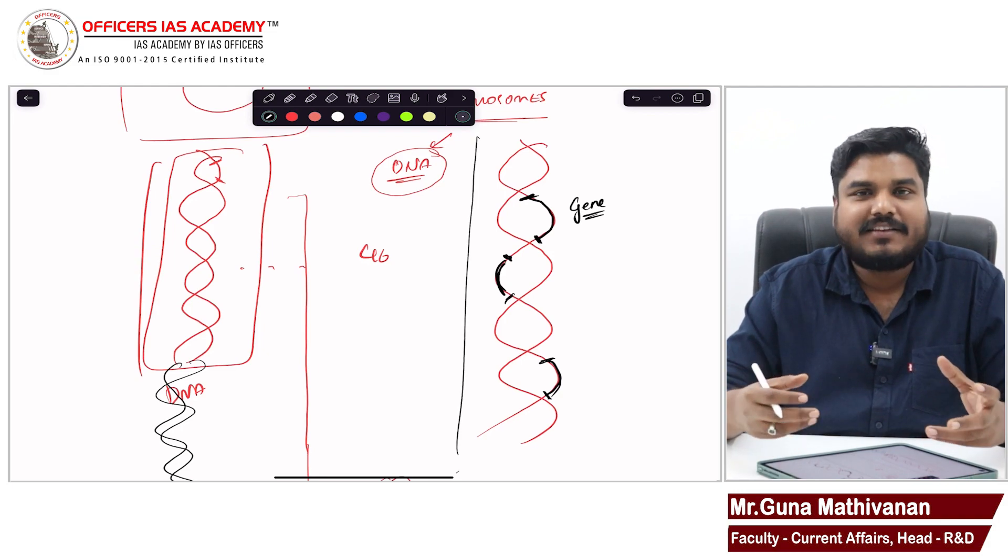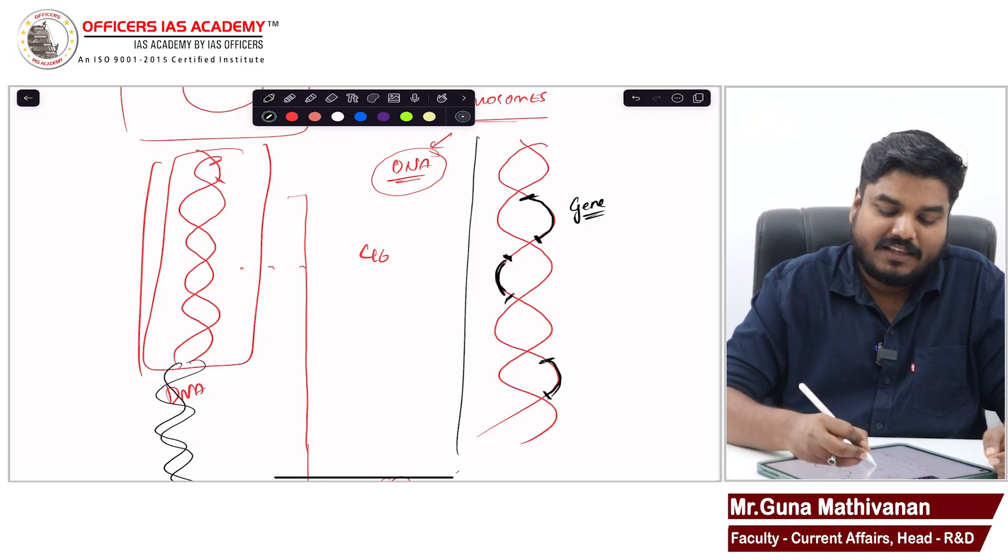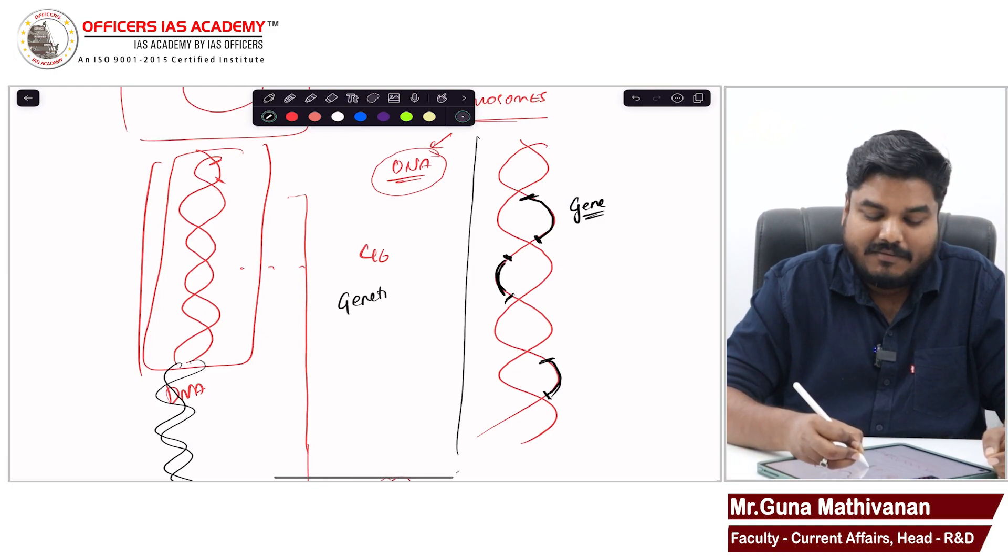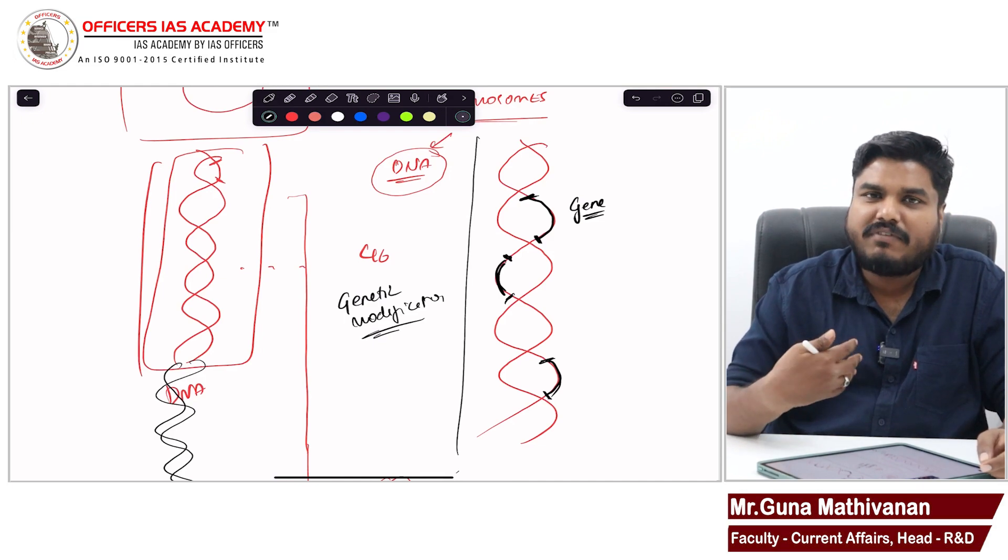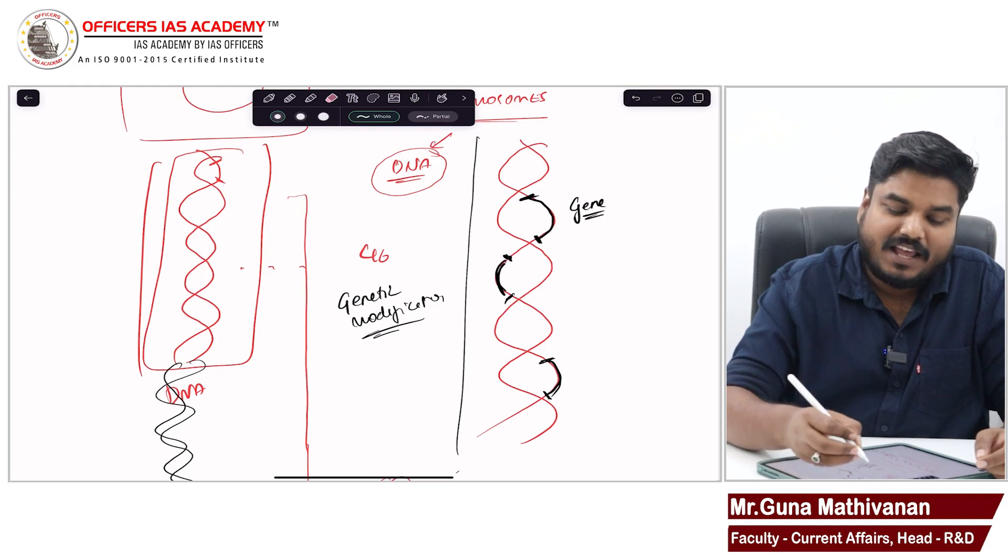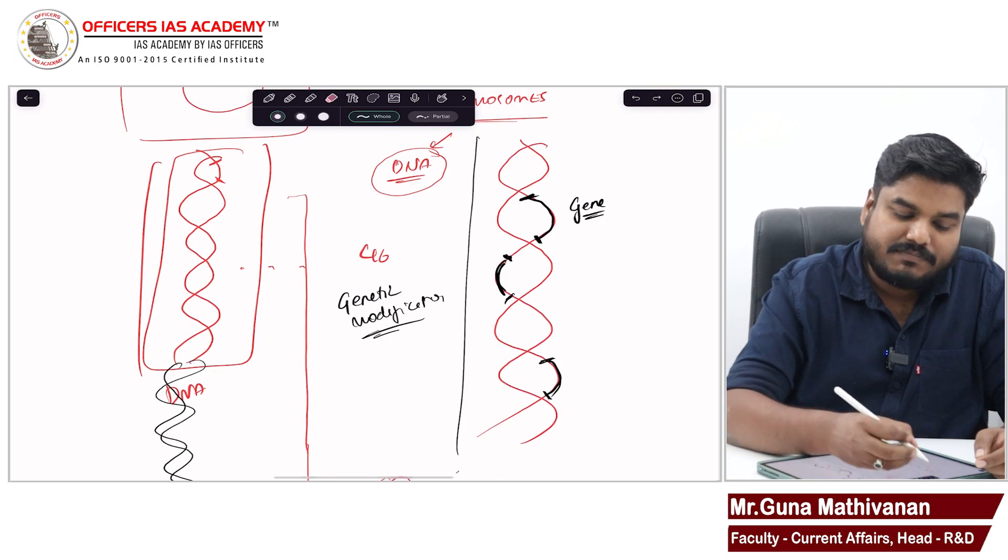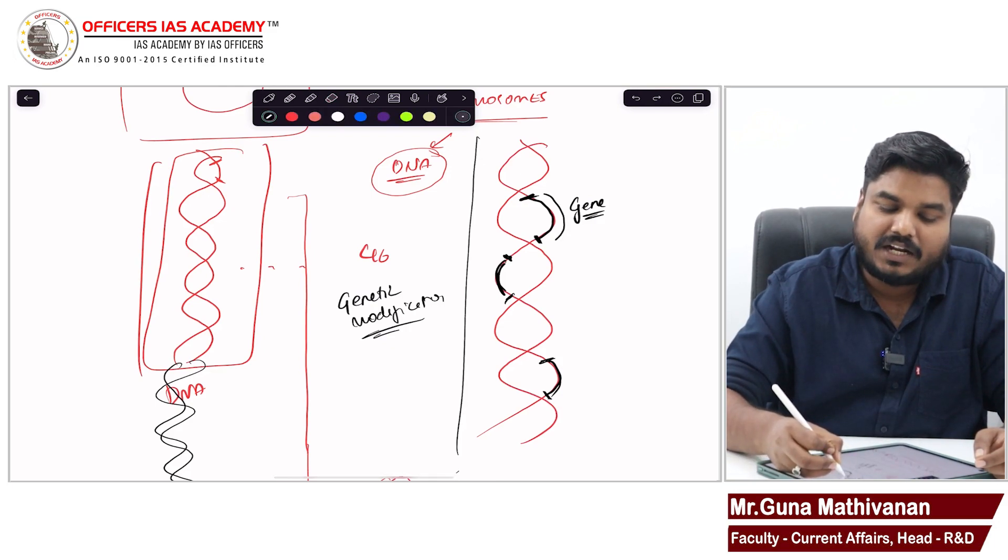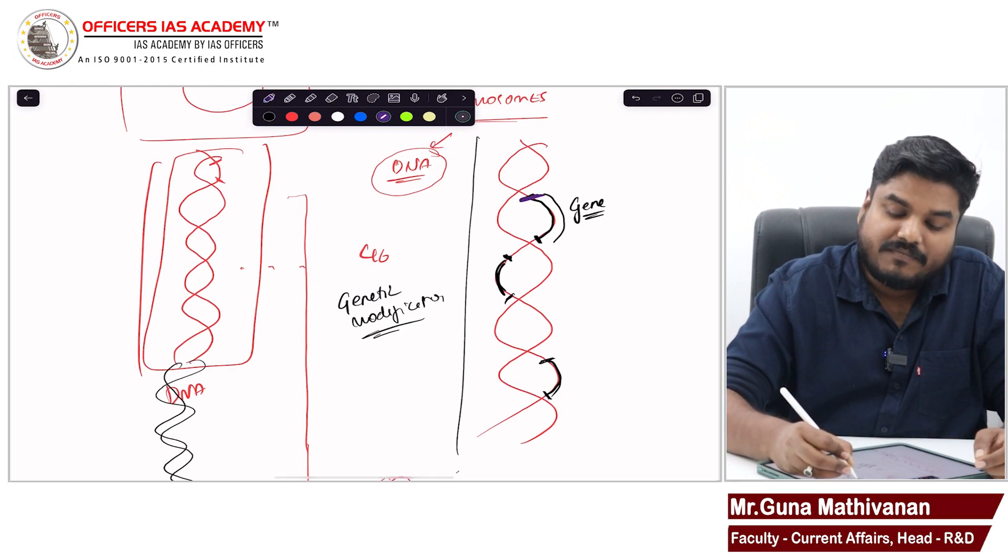Now, why are we discussing this? We have to understand genetic modification. Genetic modification is a process where we will either remove a gene - imagine I'm removing this gene, this particular part - and I'm attaching it with a new gene. That is called modification.